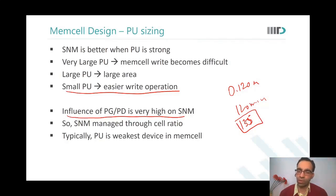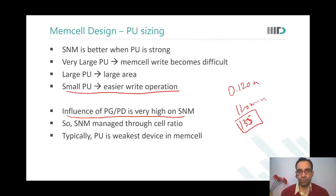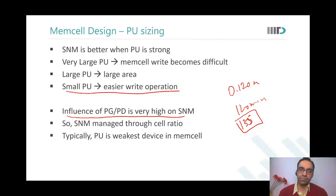A student asks: if a small pull up makes writing zero easier, what about writing a one — wouldn't that need a larger pull up? The instructor clarifies: what is most important is writing a zero, because when you write into a memory cell you essentially write a zero, and then one gets written automatically. So small pull up is based on that requirement — zero has to be written easily.